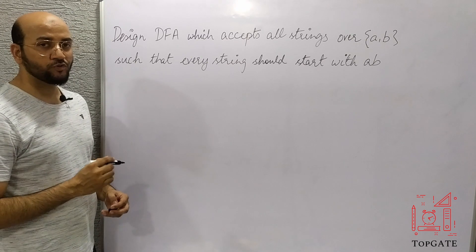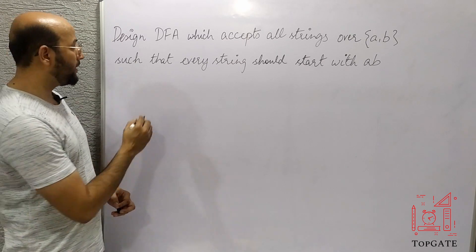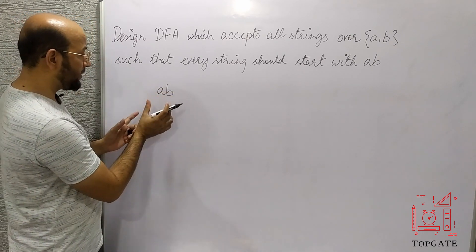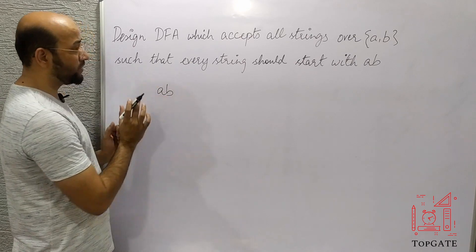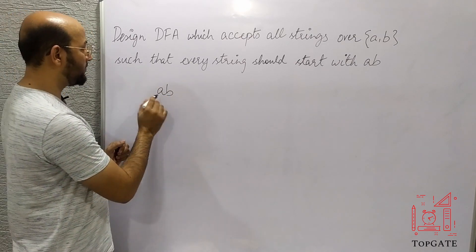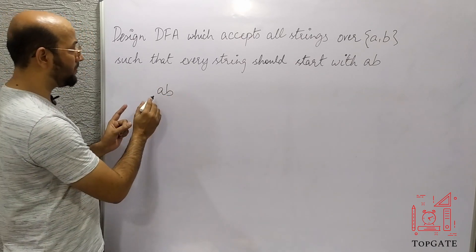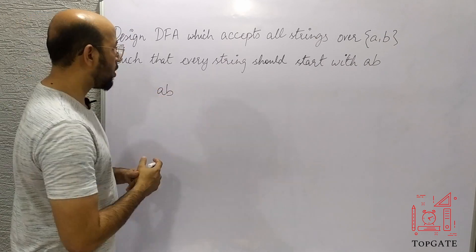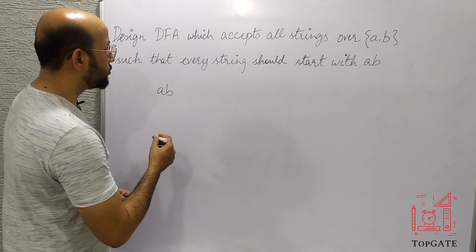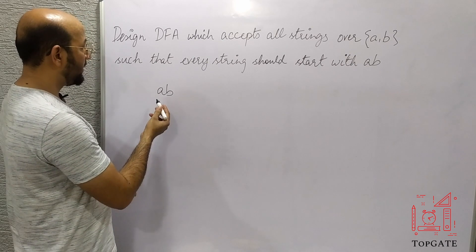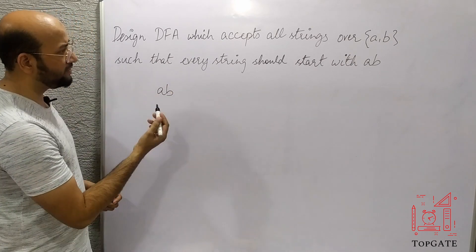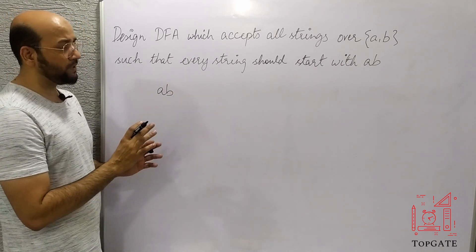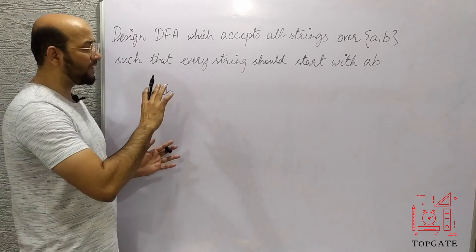The minimum string in this case will be 'ab', because this string is starting with 'ab' and we should accept it. I'll design a DFA for this minimum string first and then incorporate all the options into that one. The only prerequisite is that the string should start with 'ab'.